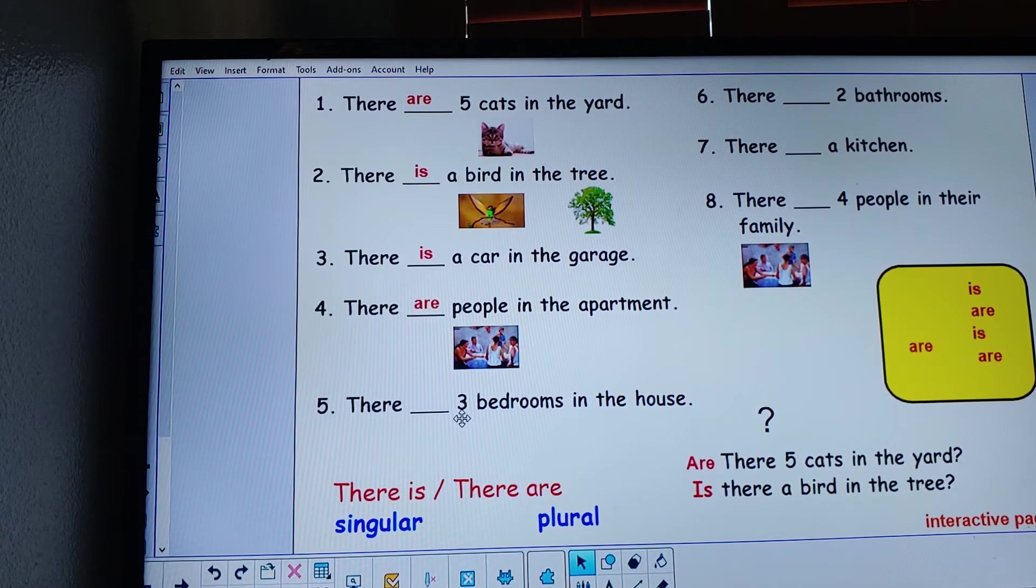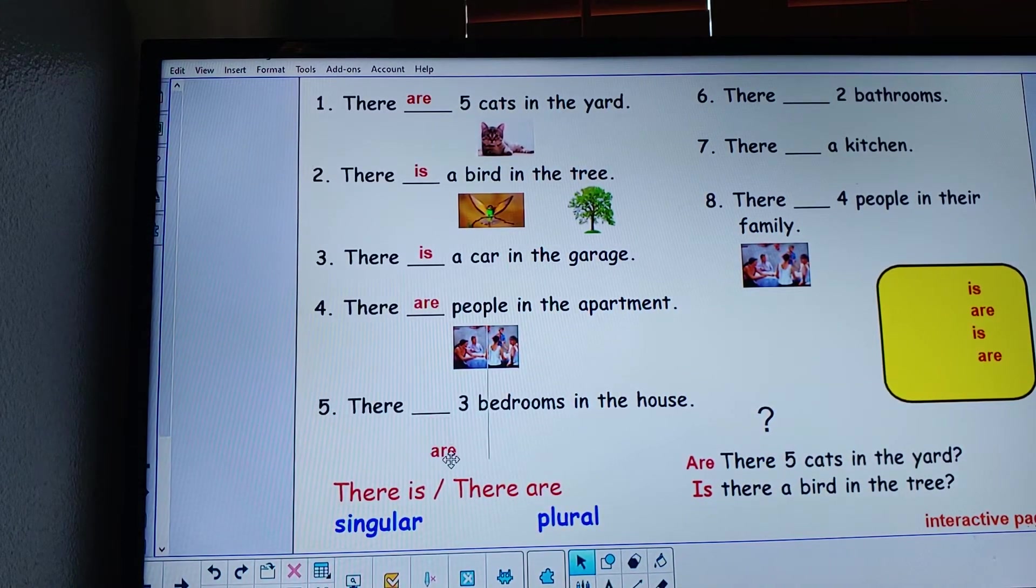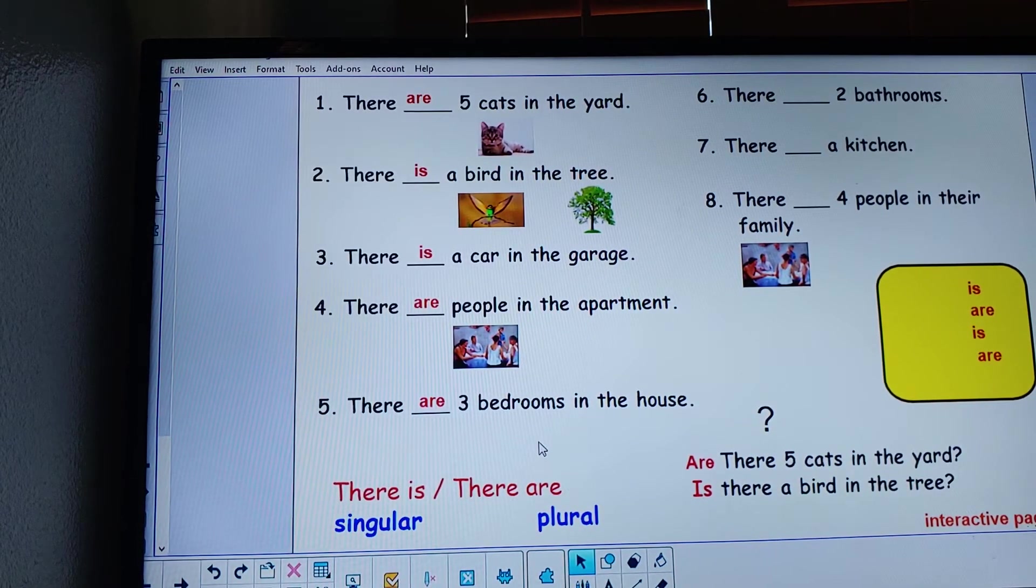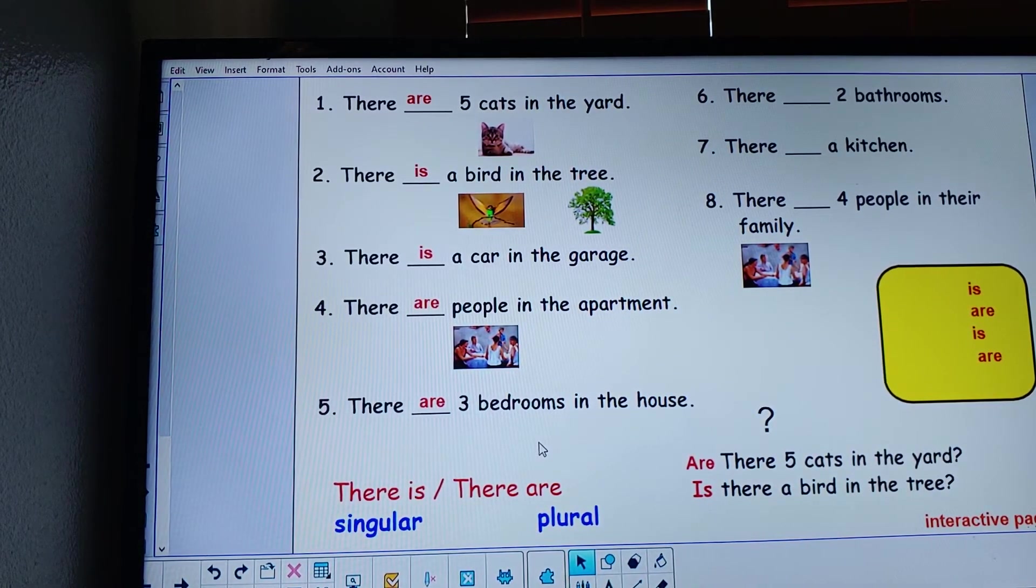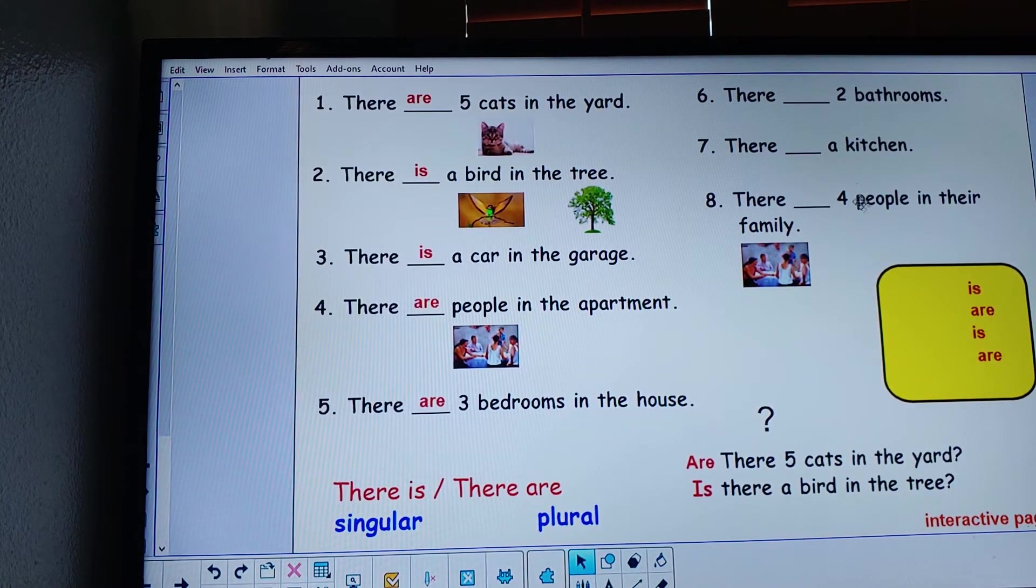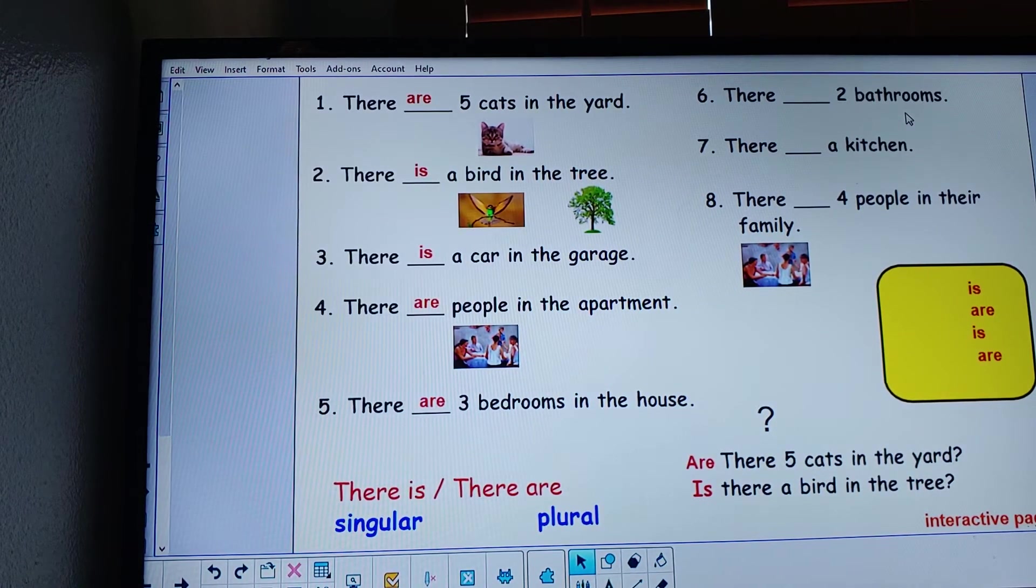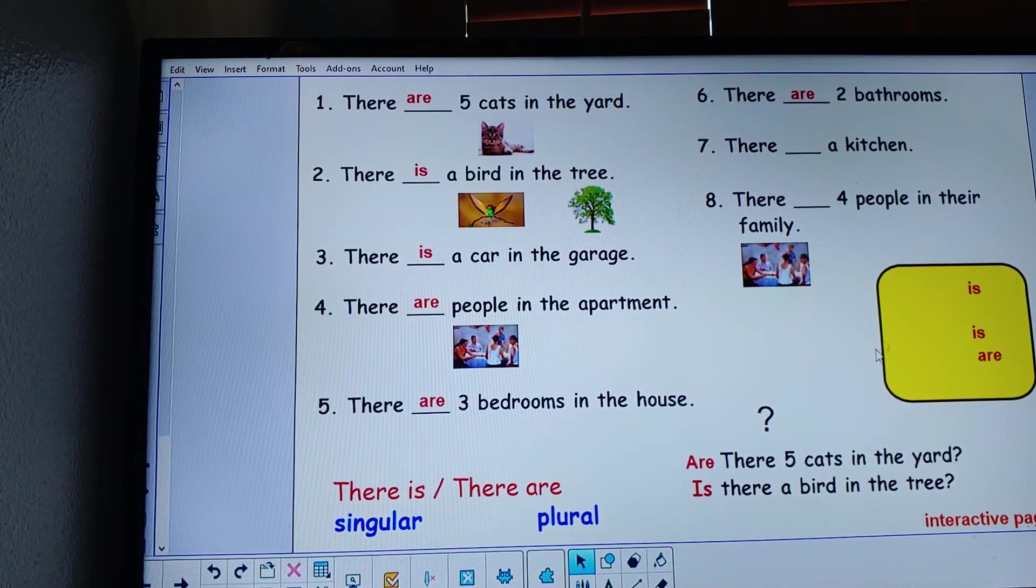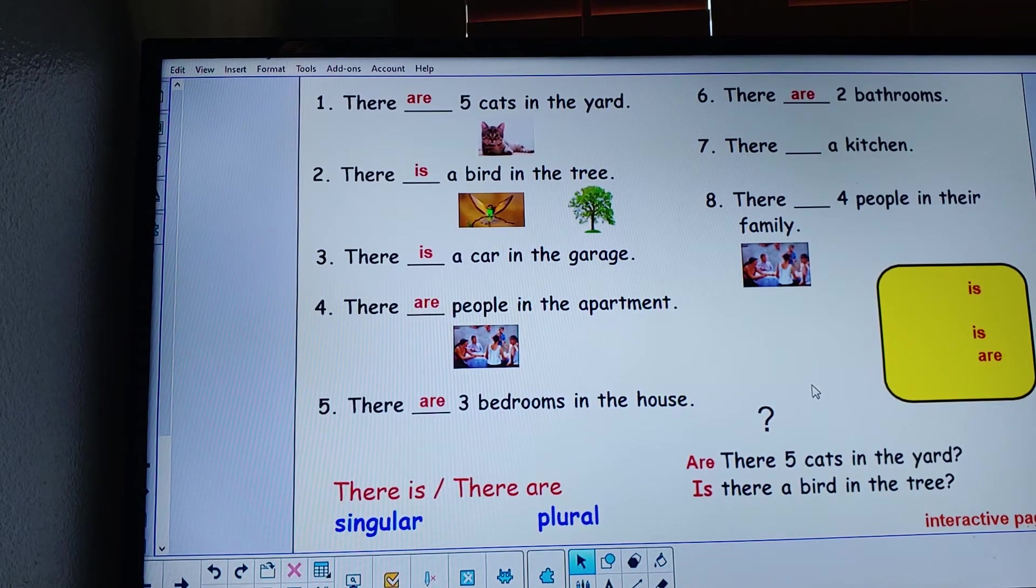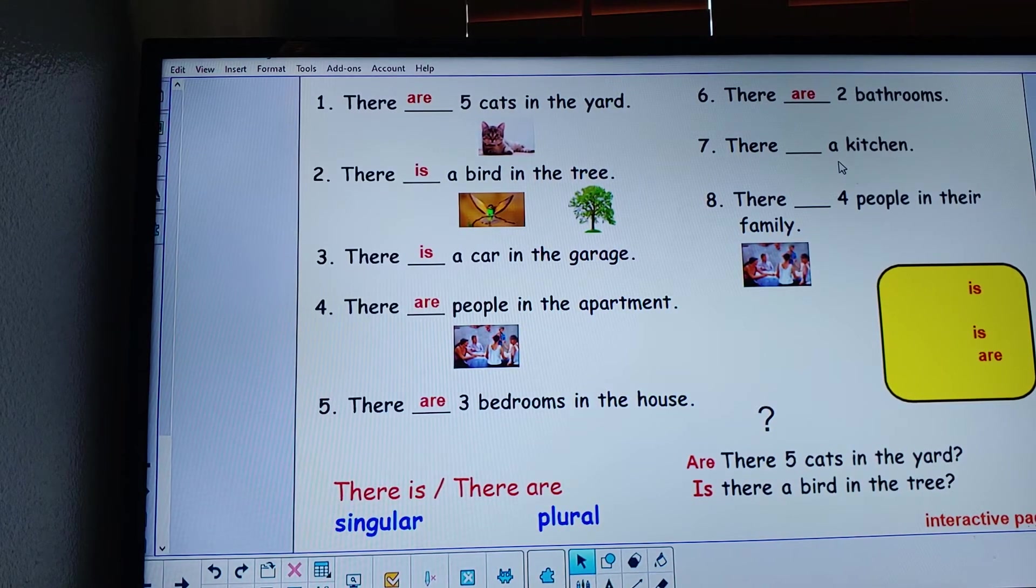Three. Plural. Are. There are three bedrooms in the house. Two bathrooms. Are. There are two bathrooms in the house.